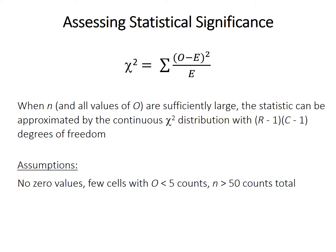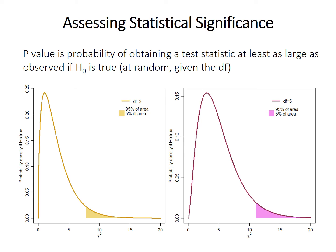'Sufficiently large' — the key assumption of the test — is generally taken to mean at least 50 counts in total, and no or very few observations with counts smaller than 5. The p-value is defined as the probability of obtaining a test statistic at least as large as observed if the null hypothesis is true. The chi-squared distribution with appropriate degrees of freedom gives the expected values of the statistic under the null, and the area under the curve at least as extreme as the observed statistic is the p-value.